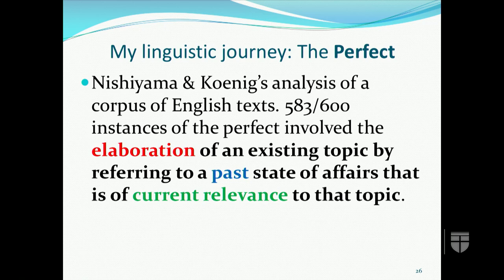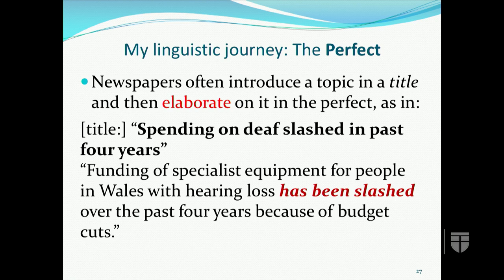The perfect in context. At a conference in 2016 on the perfect in Indo-European languages, I learned of Nishiyama and Kroenig's analysis of a corpus of English texts which contained 600 instances of the perfect. No less than 583 of these instances involve the elaboration of an existing topic by referring to a past state of affairs that is of current relevance to that topic. For example, newspapers often introduce a topic in a title and then elaborate on it using the perfect, as in 'spending on death slashed in past four years.'